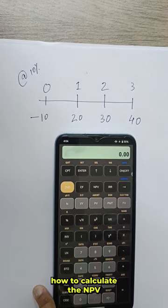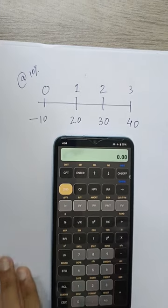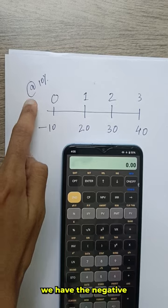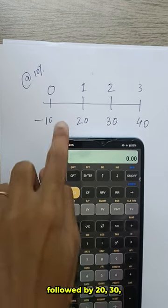In this video we'll see how to calculate the NPV with the help of an example. So here as we can see in time 0 we have the negative cash flow as -10 followed by 20,